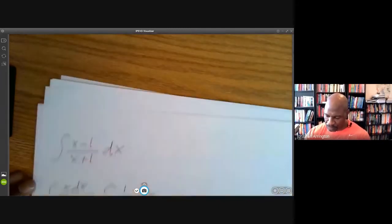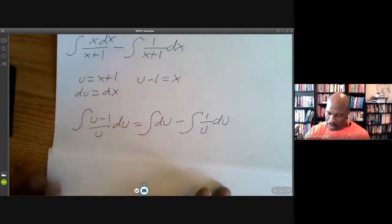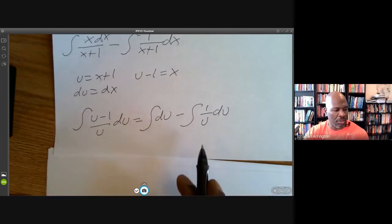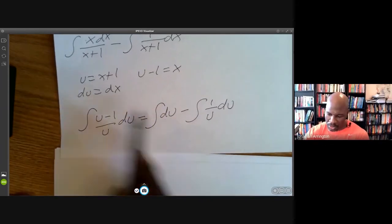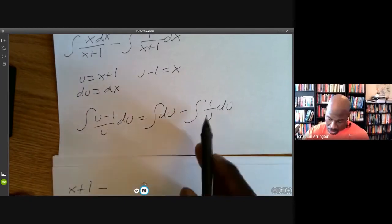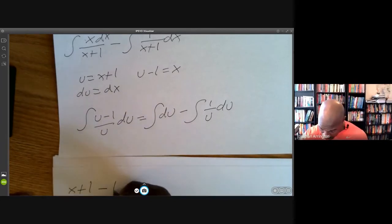The integral of du is u, and what is u? u is x+1, so that's x+1. Minus the integral of 1/u, which is ln u, and what's u? u is x+1, so minus ln|x+1|.